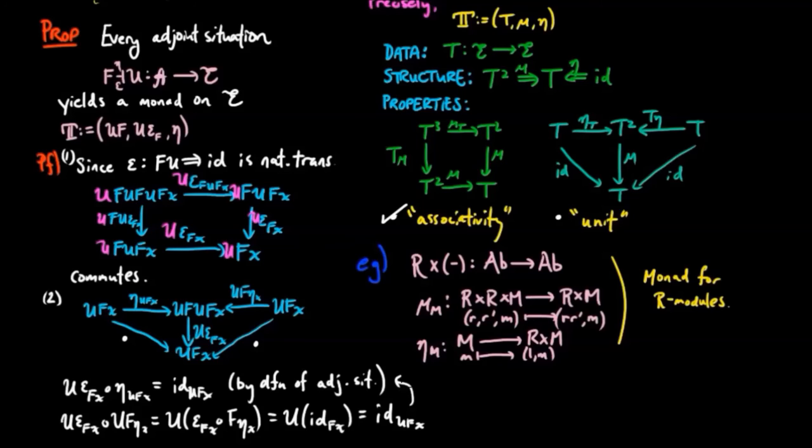And then since functors preserve the identity morphism, we have that this is equal to the identity on UFX. And that is precisely the unit law. And so we see that every adjoint situation actually does yield a monad. And we'll call this the induced monad of the adjoint situation.